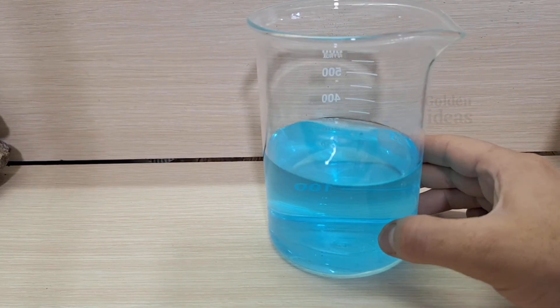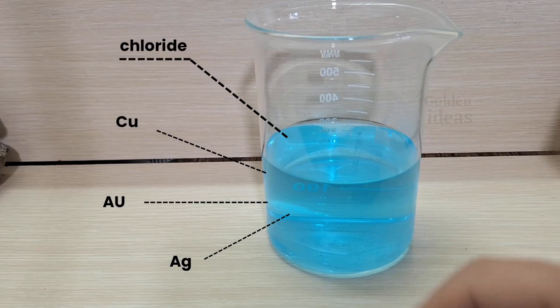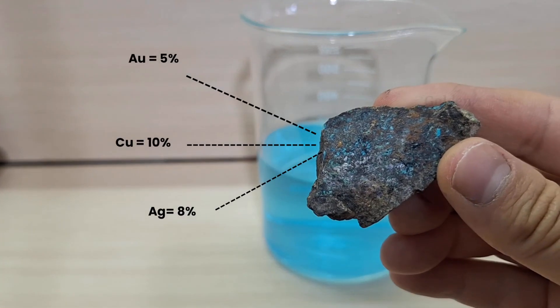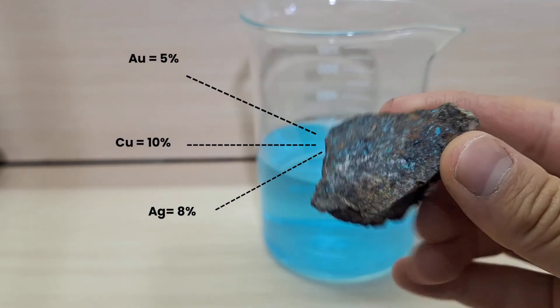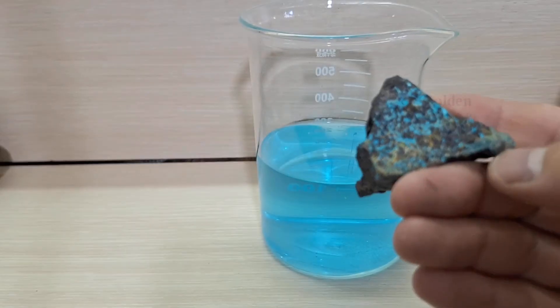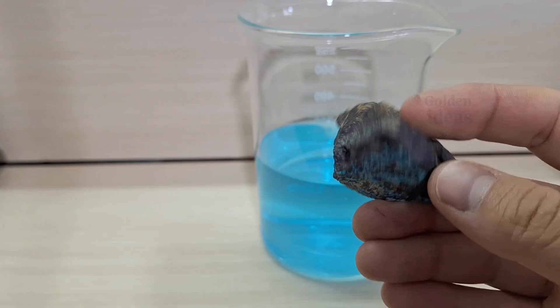Hello dear friends, I hope you're all doing well. Previously, I made a video about extracting gold using the electrolysis method. Some of you asked whether using graphite as both the anode and cathode could still result in gold deposition. So today, we're going to test that and find out together.